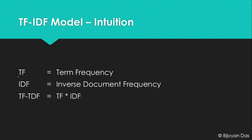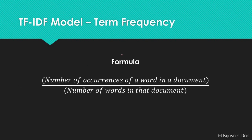IDF is the inverse document frequency. Unlike TF, IDF is not calculated per document — it is calculated for the whole corpus. It means the inverse document frequency of a word across all documents, and for each word we have only a single IDF value. If we multiply the IDF with the TF, we get the TF-IDF value of a specific word in a specific document. That is what the TF-IDF model is.